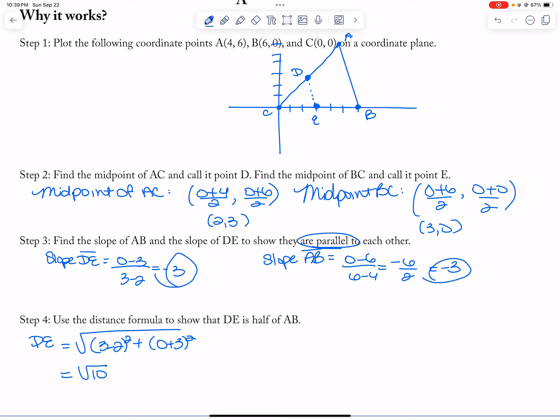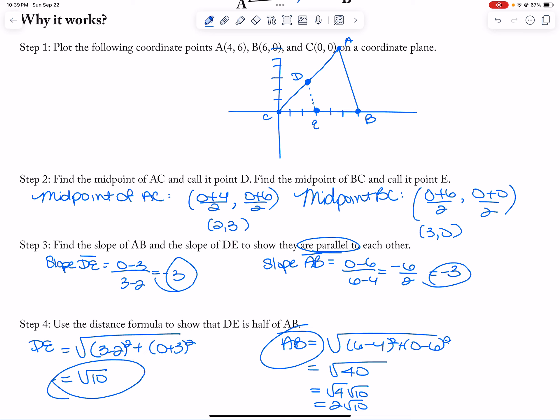And then we're going to do AB, which is 6 minus 4 squared plus 0 minus 6 squared, which is the square root of 40, which is root 4 times root 10, which is 2 root 10. So AB is double DE.